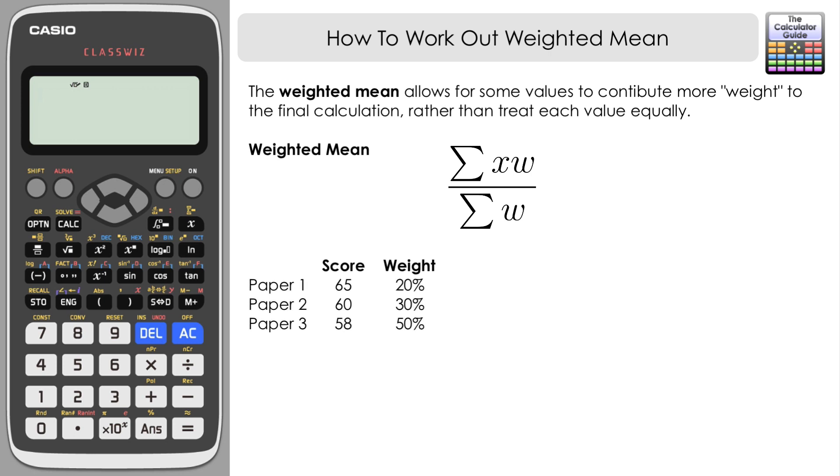Now it's probably best to look at an example to show you what this really means. If you have a look at this, we've got three papers contributing to part of a final exam. We've got three marks: 65 for paper 1, 60 for paper 2, 58 for paper 3, but then we've got a different weighting for each paper. We can see that paper 3 is clearly worth the most at 50% of the final mark, paper 1 being 20% and paper 2 being 30%.